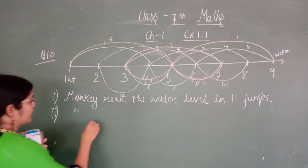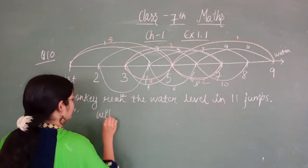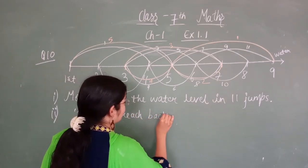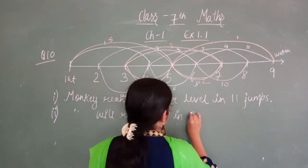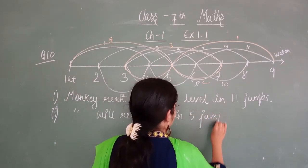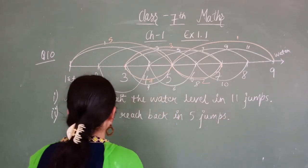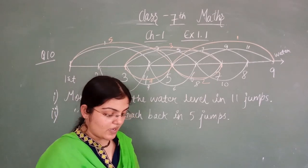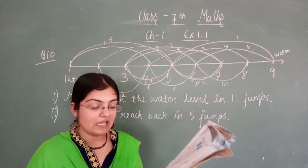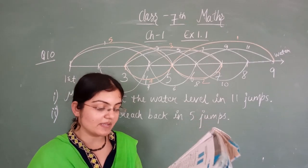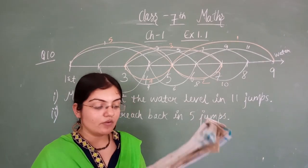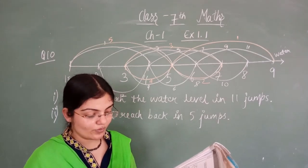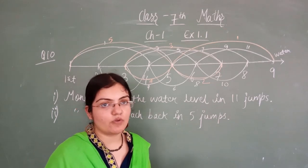So you can write: monkey will reach back to the top in total 5 jumps. Now similarly the third part: if the number of steps moved down is represented by a negative integer and the number of steps moved up by a positive integer, represent his moves in part 1 and part 2 by completing the following.